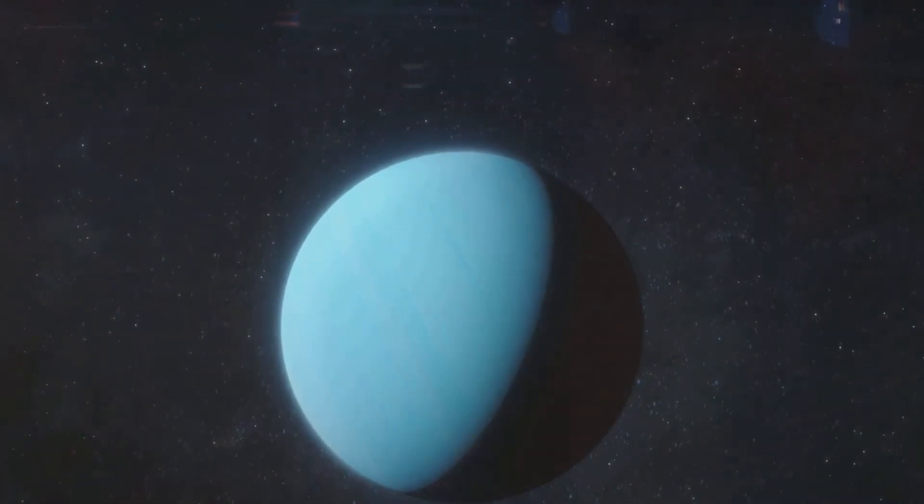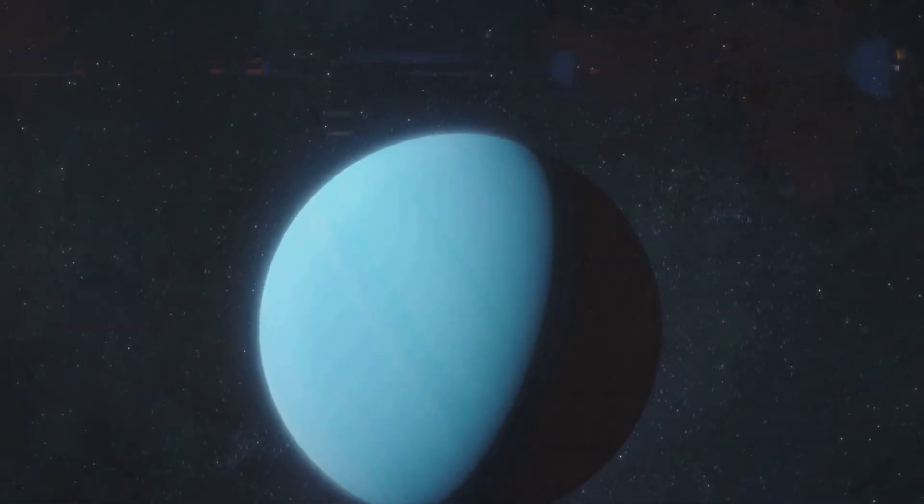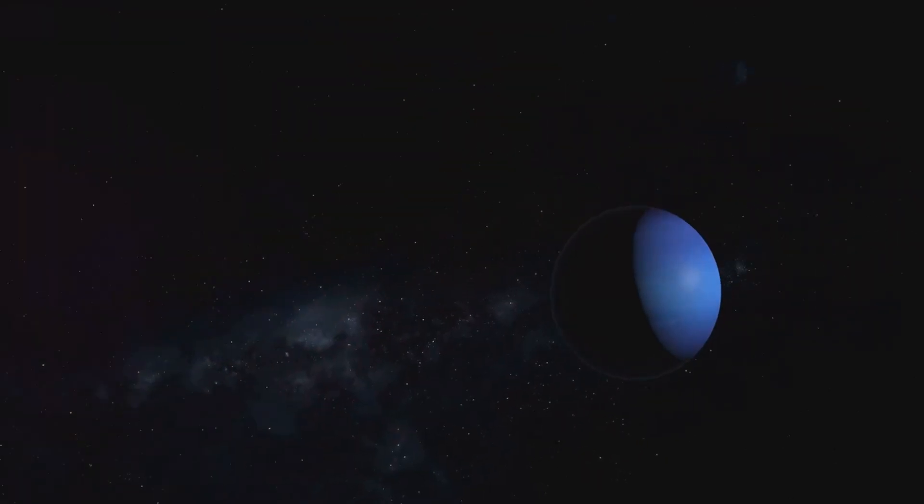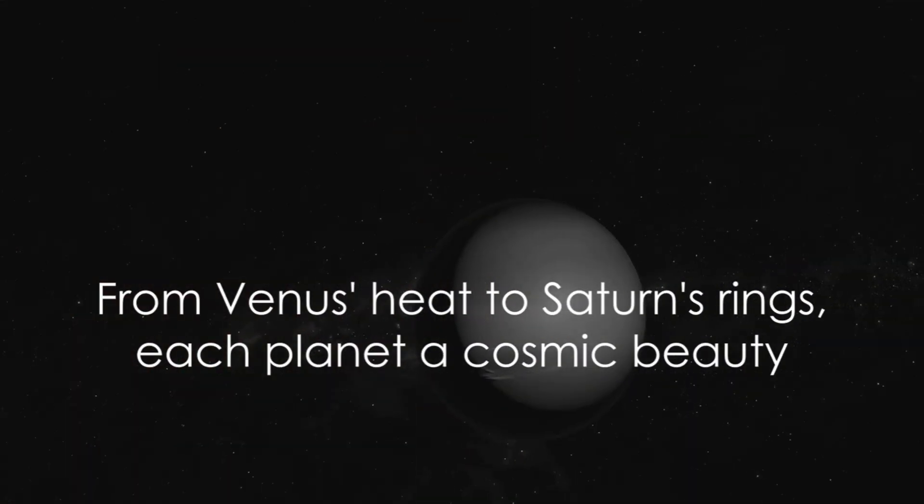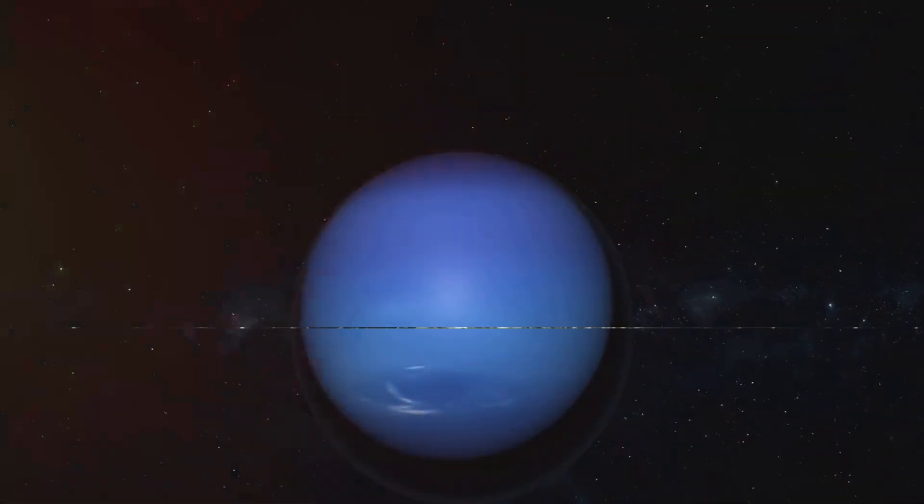Uranus and Neptune, the ice giants, are known for their striking blue color, caused by methane in their atmospheres. They are the farthest known planets in our solar system, with Neptune being the farthest from the sun. From the scorching heat of Venus to the icy rings of Saturn, each planet presents a unique spectacle of cosmic beauty.